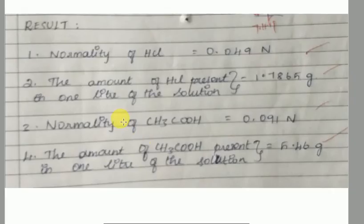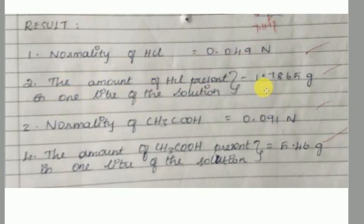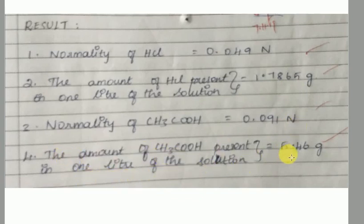Results: The normality of hydrochloric acid is 0.049 N. The amount of hydrochloric acid present in one liter of the solution is 1.765 grams. The normality of acetic acid is 0.091 N. The amount of acetic acid present in one liter of the solution is 5.46 grams.